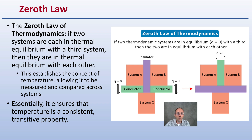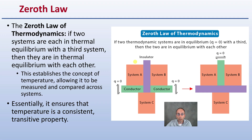The zeroth law: if two systems are each in thermal equilibrium with a third system, then they are in thermal equilibrium with each other. This establishes the concept of temperature, allowing it to be measured and compared across different systems. Essentially, this ensures that temperature follows a constant transitive property. You can see that here with an insulator versus a conductor — if two thermodynamic systems are in equilibrium, where Q equals zero, with a third, then the two are in equilibrium with each other, having that transfer of energy from one system to another.